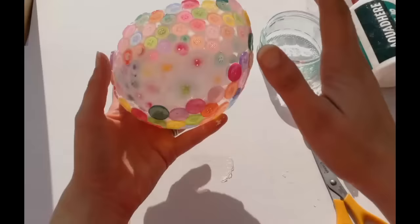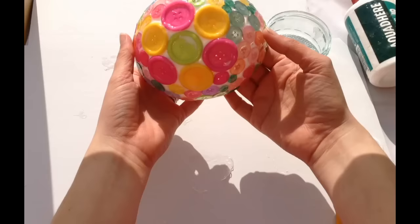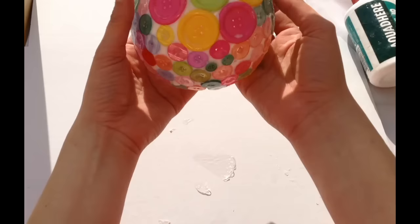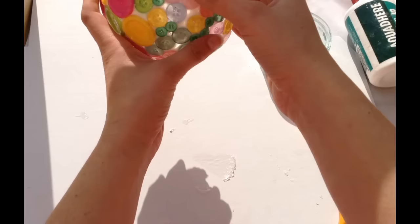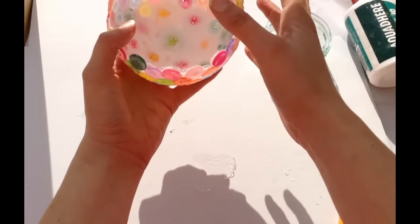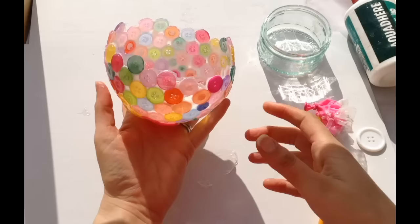Now it's important to note that because we have used the Aquadhere, which is a water-soluble glue, you can't actually immerse this bowl in water. I actually don't recommend at this stage putting any water anywhere near it. You could use a varnish to get a thicker coat to help it be more water-resistant. So there's your finished button bowl. If you'd like to make one of your own, please go to buttontopia.com.au to purchase your supplies.